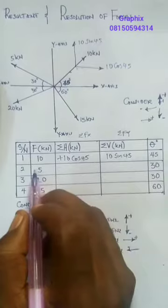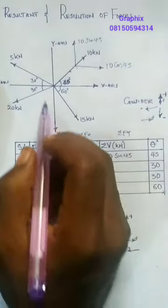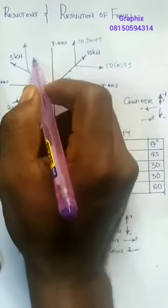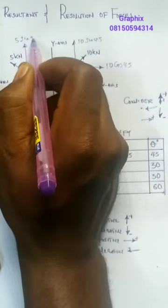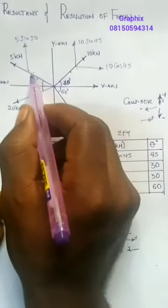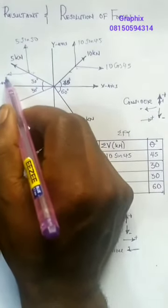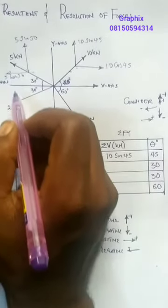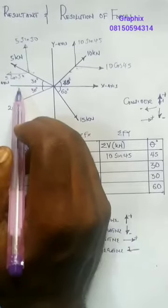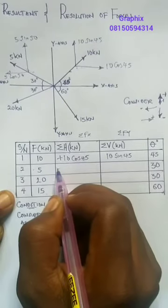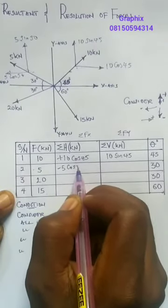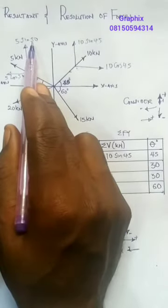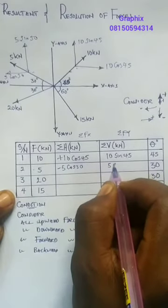The next one is force number 2, at an angle of 30 degrees. I am going to resolve it. The vertical component will be 5 sin 30, and the horizontal component will be 5 cos 30. The horizontal force is parallel to the x-axis and is facing left, so it will be minus 5 cos 30. For the vertical force, it is facing upward, so it will be positive 5 sin 30.